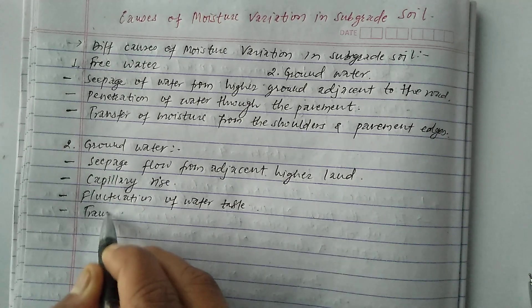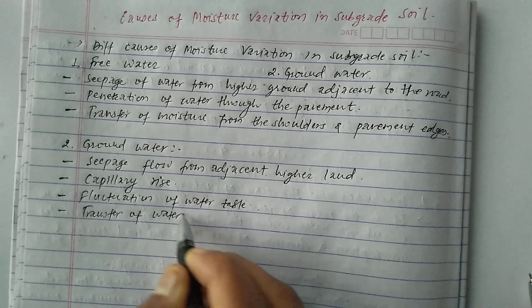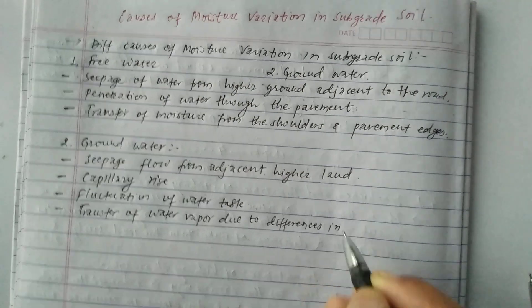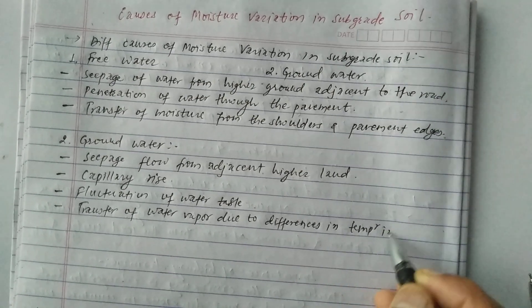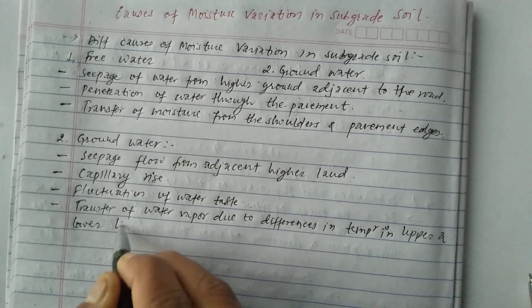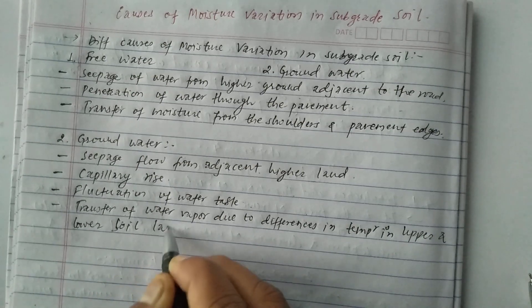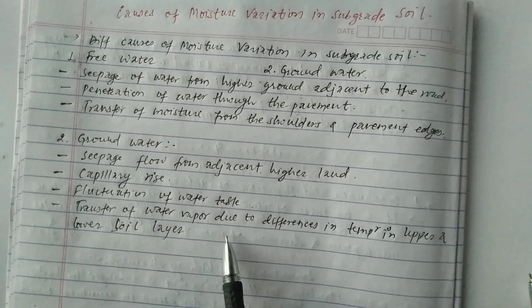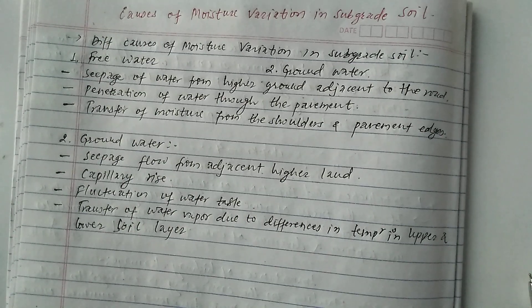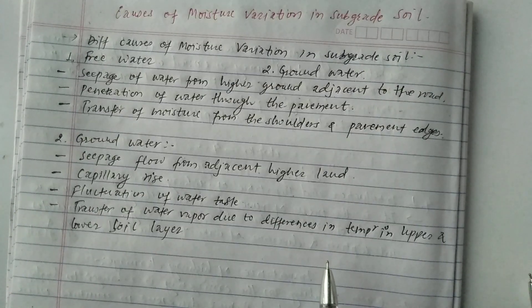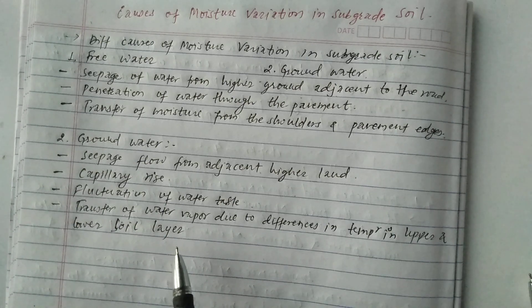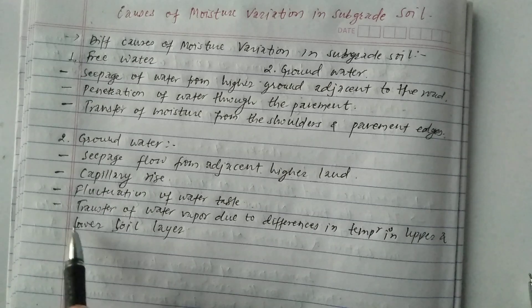The fourth cause under groundwater is transfer of water vapor due to differences in temperature in the upper and lower layers of soil. Whenever water is transferred as vapor due to temperature differences, it transfers from one layer to another layer, causing moisture variation in the upper and lower soil layers.